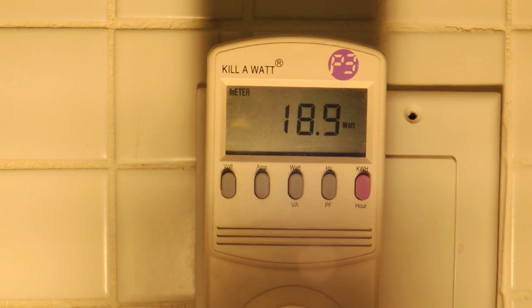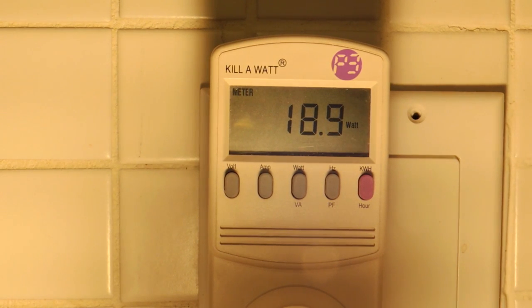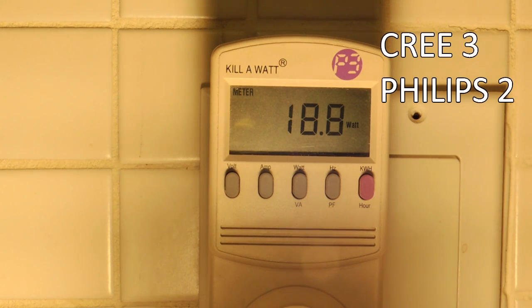Okay, power consumption. Watt-hour meter obviously telling me the bulb's drawing at 18.9 watts. Packaging says 18, so the bulb is drawing more than the packaging. When I put in the Philips, it's drawing actually even more. It's coming in at 20.5 watts. So the point goes to the Cree here for drawing less power.